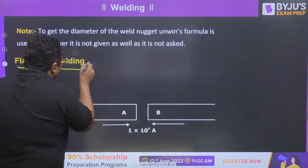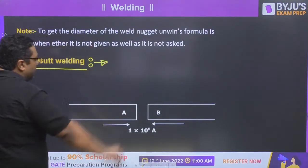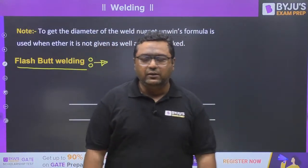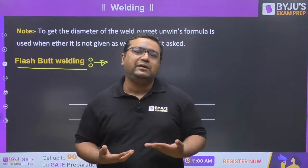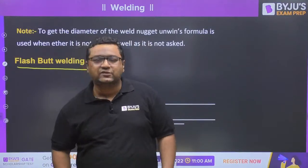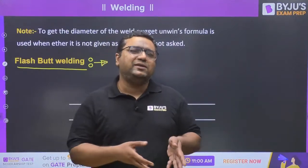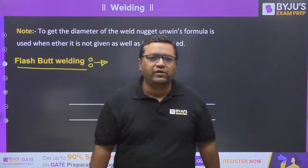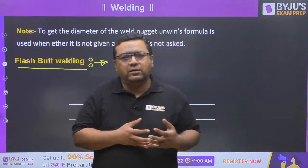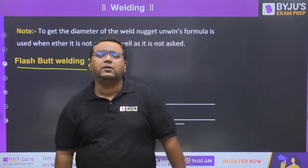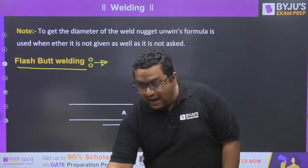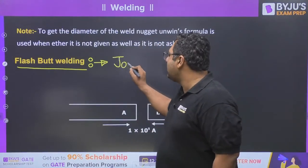Next type of welding is flash butt welding - another type of resistance welding. With arc welding we were making butt welds; resistance welding was for lap joint configuration in spot and projection welding. People then asked: why not make butt joints with resistance welding too? That led to flash butt welding, whose main application is joining railway tracks.